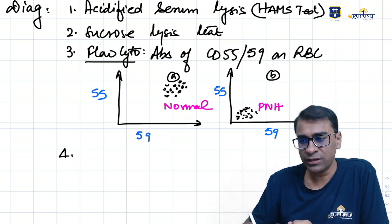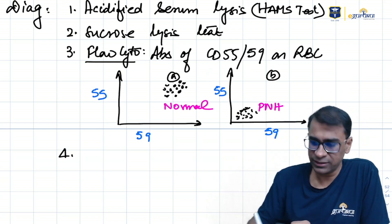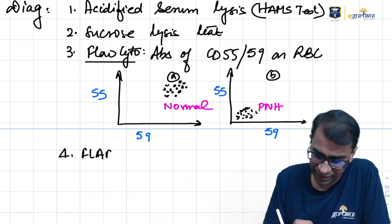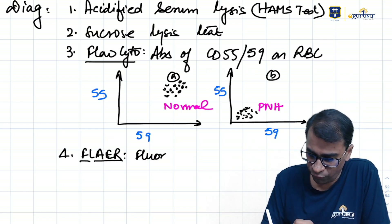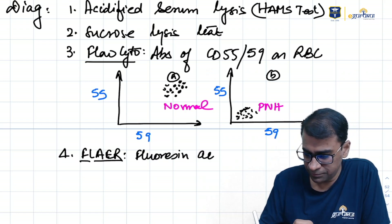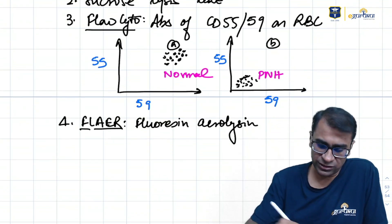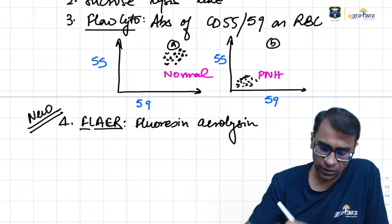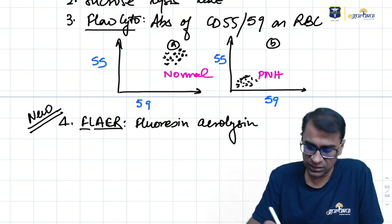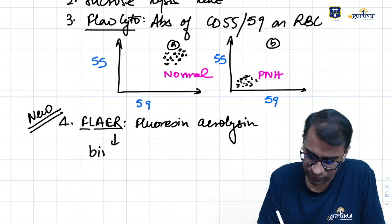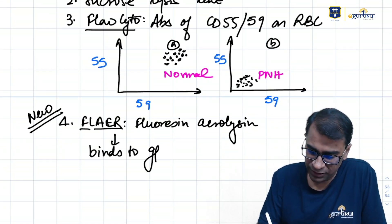The fourth test is a recent one, called FLAER. It stands for Fluorescin Aerolysin. This Fluorescin Aerolysin is a very new test available. What it does is, this test actually binds to GPI.